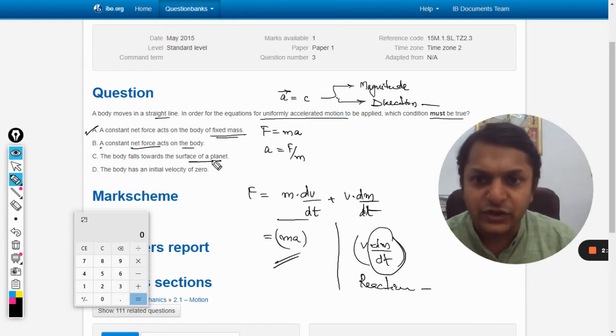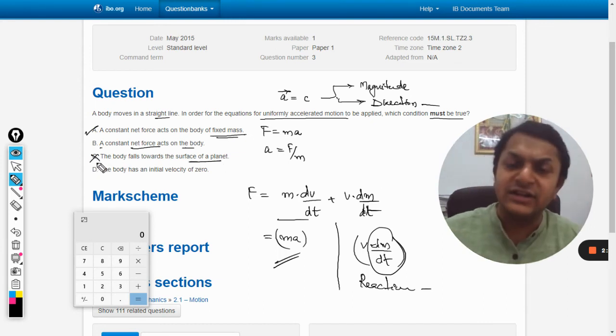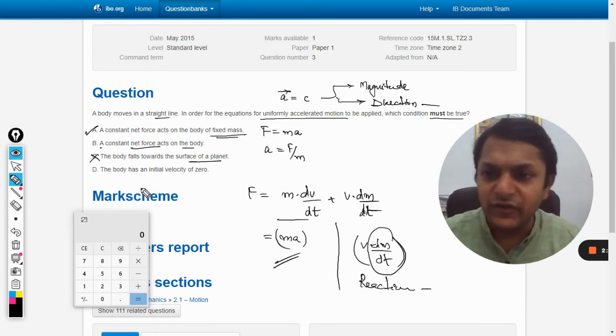The body falls towards the surface of a planet - now this is not a necessary condition. If it is not falling but moving in a horizontal fashion, even then our equations are valid. The body has initial velocity to be zero - no, that is not the condition. So we say that A is the right option.